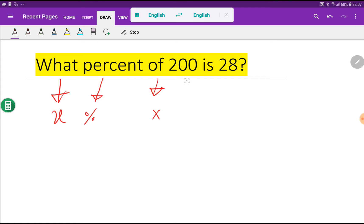And of means multiplication. And here we have 200, and then is means equal sign, and then we have 28.